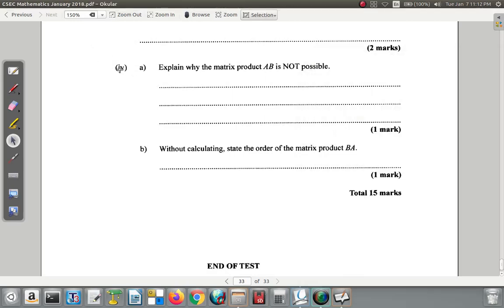Okay, so let's continue with this question. Question 11C part 4 now: Explain why the matrix product AB is not possible.